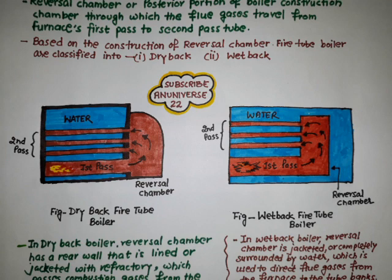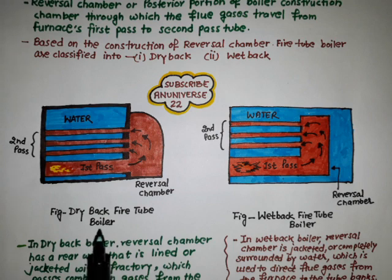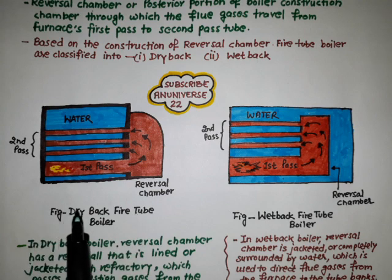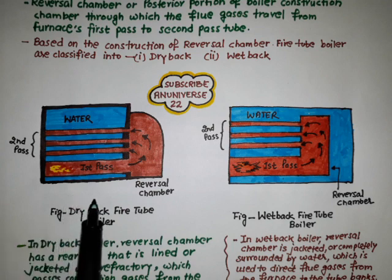Advantages of the wet back fire tube boiler include: no rear door refractory to repair, no refractory baffling to burn out, less thermal stress on the tube seats, and maximum sustainable efficiency. By contrast, the dry back fire tube boiler has disadvantages such as deteriorating rear refractory, leaking baffles, leaking door seals, and heat-stressed rear tube seats. Broken baffles and leaking seals short-circuit the boiler gas flow, causing high stack temperatures and reduced efficiency until repairs are made.